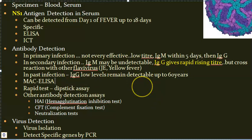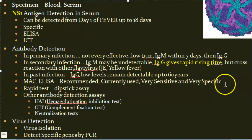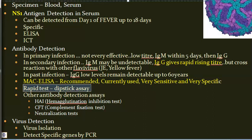MAC ELISA (IgM antibody capture ELISA) is the recommended and currently used tool for dengue diagnosis. It is very specific and sensitive. In secondary infection, IgG gives a rapid titer but may cross-react with other flaviviruses.